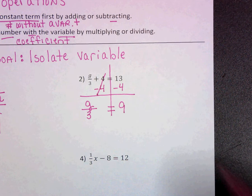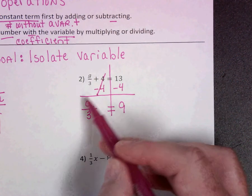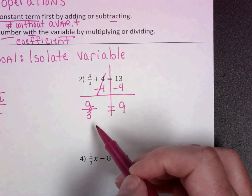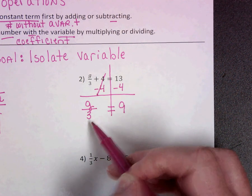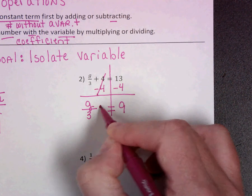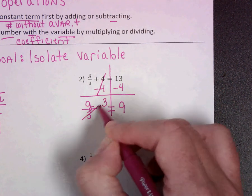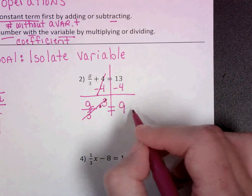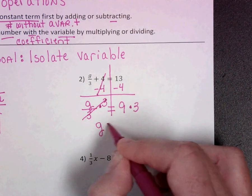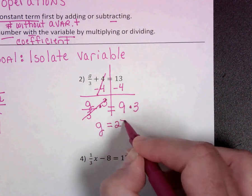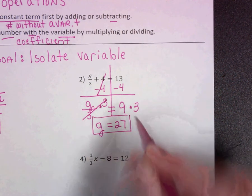That makes a zero pair, so I'm left with G over 3 equals 9. Okay, now we need to cancel out this 3 so that we have G by itself. This is G divided by 3. The opposite of dividing is to multiply, so that's just going to cancel it out, and I'm going to multiply by 3 on the other side. So I get G equals 27. 9 times 3 is 27.